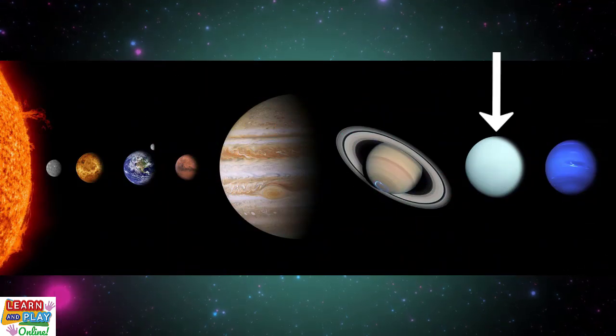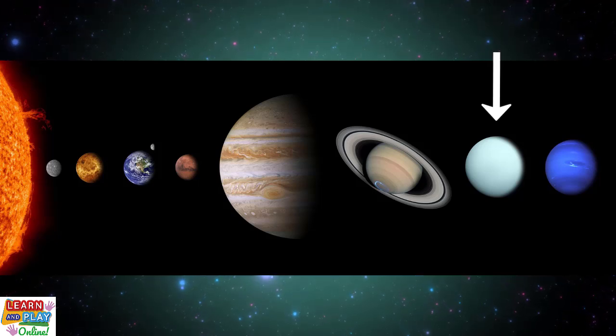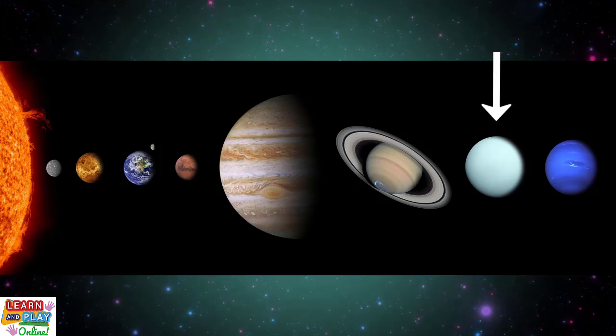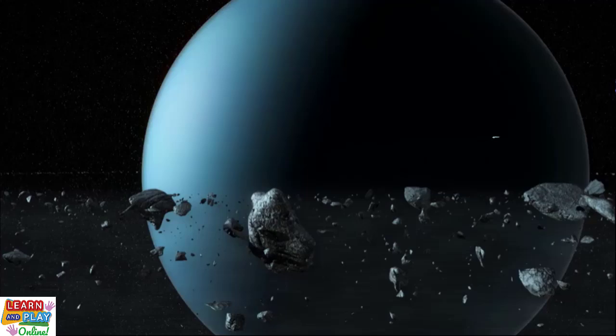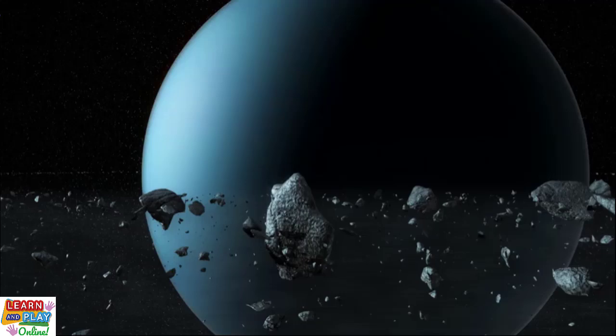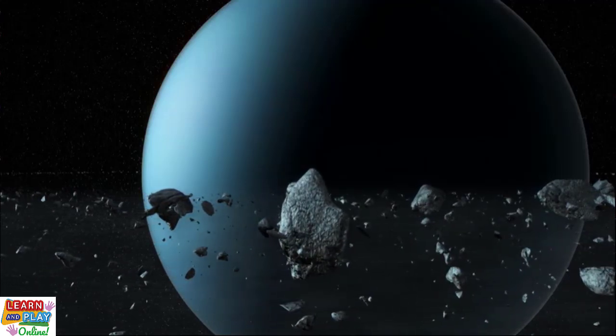Ice Giant Uranus is the 7th planet from the sun. It is an outer planet and it is categorized as an ice giant because it is a cold planet that is mainly made up of icy materials such as water, methane and ammonia. Just like the other outer planets, Uranus has its own set of rings. The 13 sets of rings that surround Uranus are made of ice and rocks and are very dark in color.